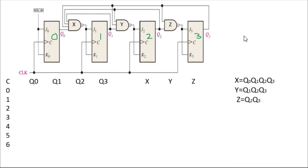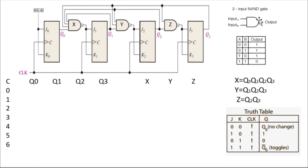Let's draw the truth table for the NAND gate and the JK flip-flop to make things easier. In a NAND gate, when all inputs are zero you get one, and when all inputs are one you get zero. For a four-input NAND gate, the key rule is: only when all inputs are one will you get zero output; in every other case you get one.